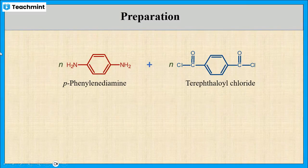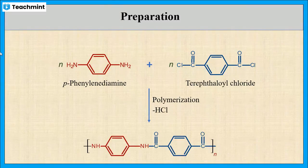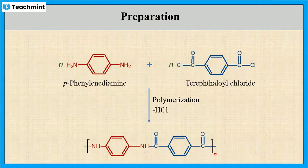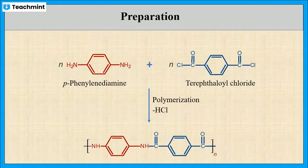On polymerization with the removal of HCl, it gives Kevlar. This is the structure of Kevlar with amide linkage at the center and two aromatic rings on both sides.